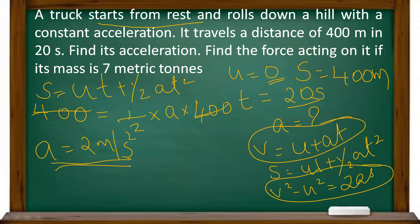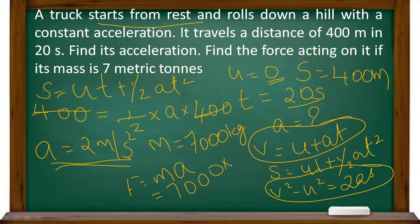Find the force acting on it if its mass is 7 metric tons. Using the formula force equals mass into acceleration, mass is 7 metric tons which equals 7000 kg, and acceleration is 2 meters per second squared. Multiplying these two gives 14000 newtons. Therefore, the force is 14000 newtons.